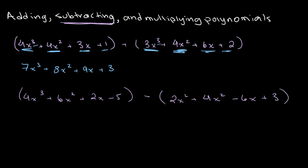Now in this case, once again, we want to match like terms. So for example, 4x cubed and 2x cubed. But we also want to keep in mind the minus signs — we want to remember that we are subtracting them. So what we do here is we take 4x cubed and subtract 2x cubed, so we subtract the coefficients. 4 minus 2 is 2, so we get 2x cubed.